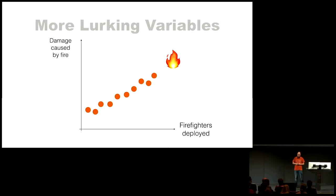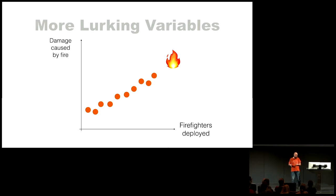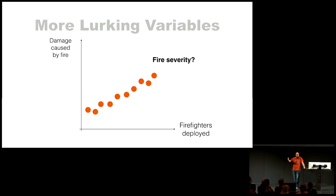One more example of a lurking variable: when there is a fire incident, the more firefighters you deploy, the bigger the damage is. So you might say, well, let's deploy fewer firefighters to keep the damage down. The lurking variable in this case is the severity of the incident — when there is a big issue, more firefighters are deployed. Maybe politicians, when they do cuts to public services, kind of look at the wrong variables.